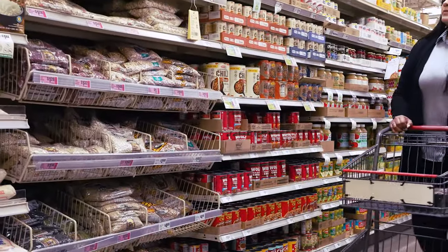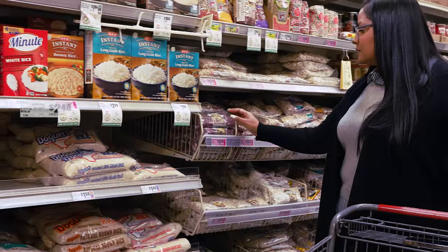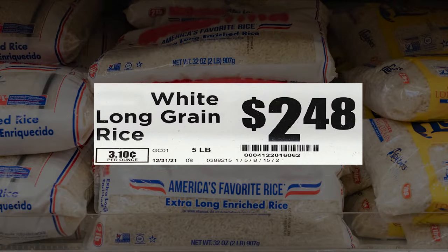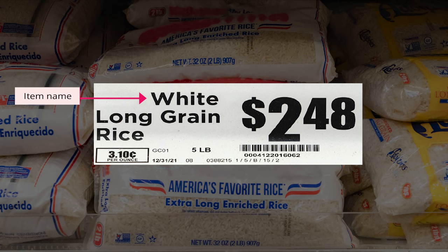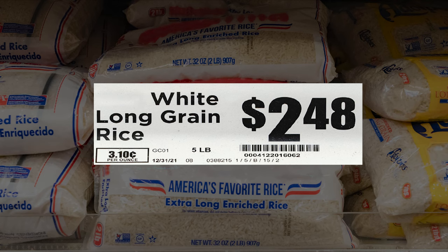You've likely seen labels on the shelves under the items at the store but didn't know how to use them to your advantage. Most product labels typically include the item name, the total price of the product, the price per unit, and the total amount of units in the package. To find the best product for the lowest price, we want to focus on comparing the unit price by using this label.